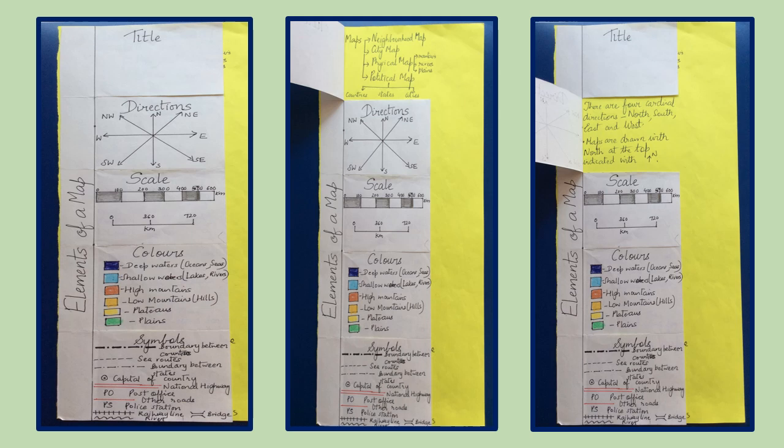The next element of a map is directions. There are four cardinal directions: north, south, east and west, further classified into northwest, northeast, southwest, southeast. Maps are drawn with north at the top, indicated with an arrow and N.